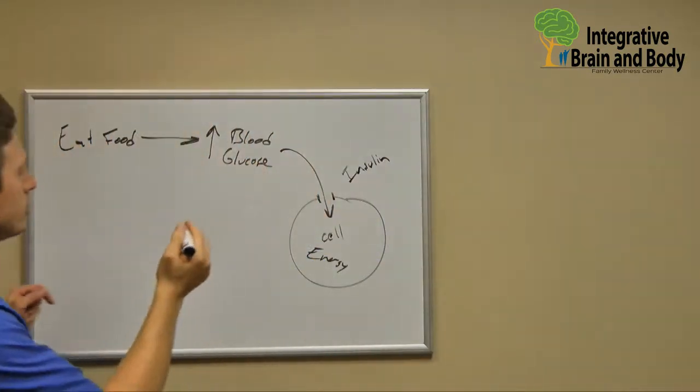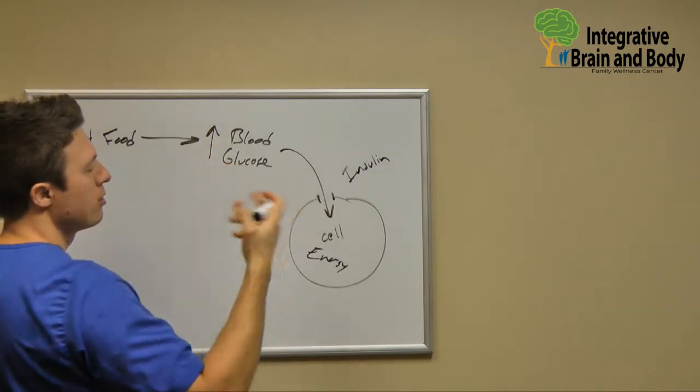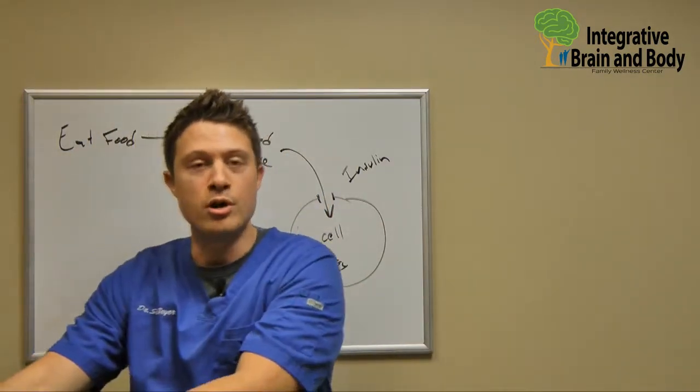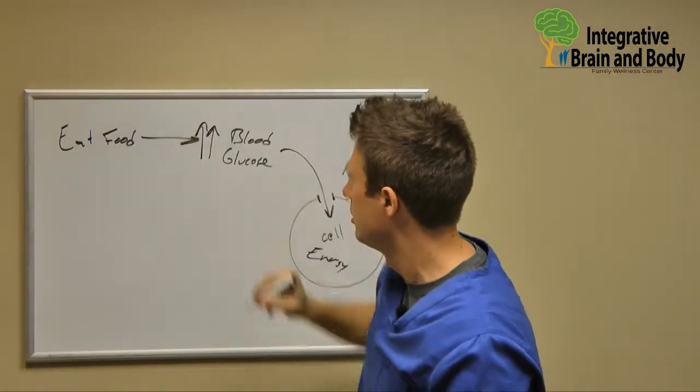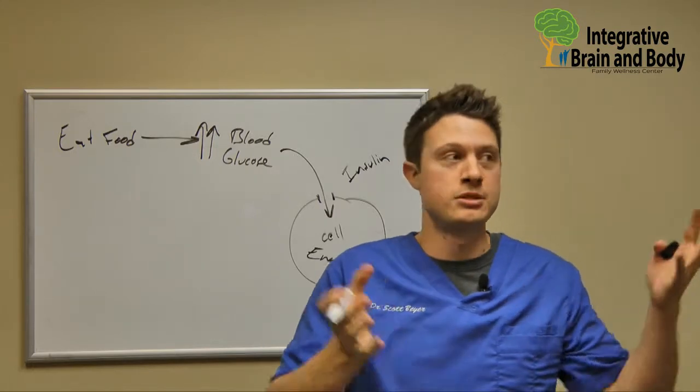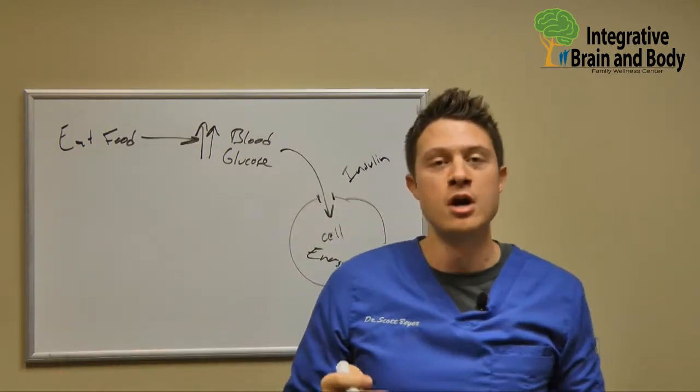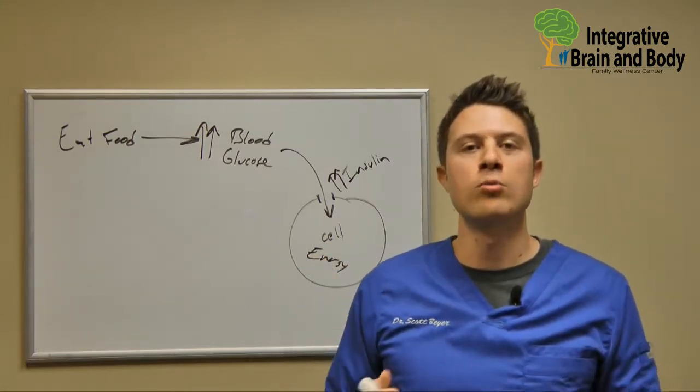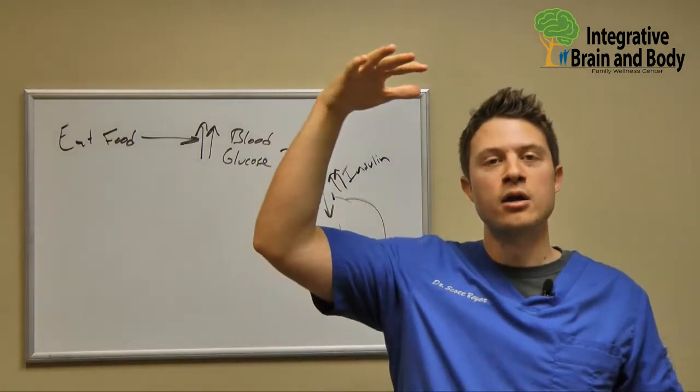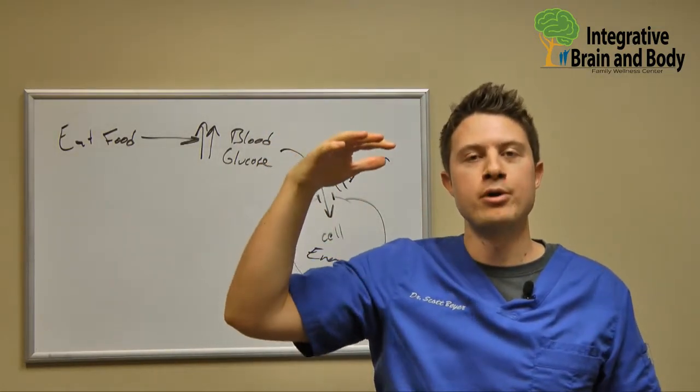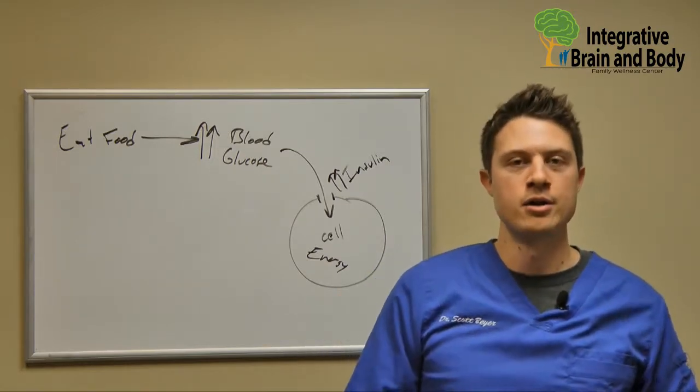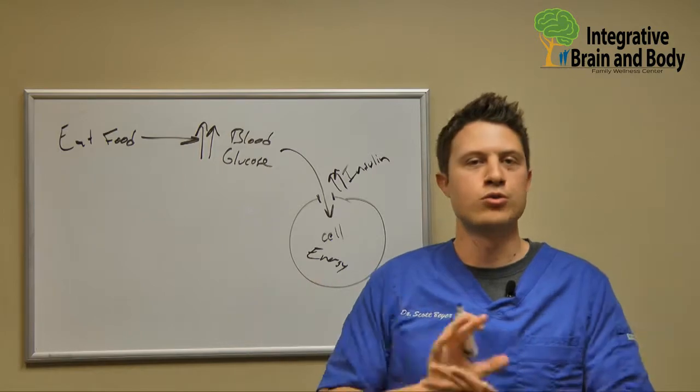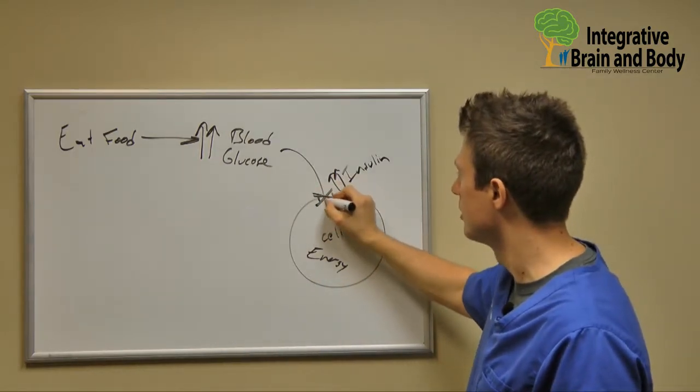If insulin's main job is to take glucose inside of the blood and put it inside of the cell where it belongs, if we have chronic elevations in blood glucose, what's going to happen is since insulin's job is to take all this blood glucose and shove it inside of the cell where it belongs, our body's going to start secreting more insulin. And what happens with any type of signaling molecule or peptide or hormone is if hormones get too high for a long period of time, the cells will start to grow a little bit more resistant to that hormone. And insulin is no exception. So if there's chronic elevations of insulin, the cell just grows a little bit more resistant to that.